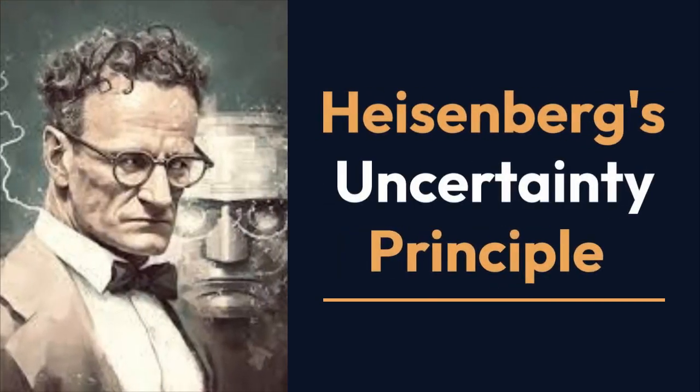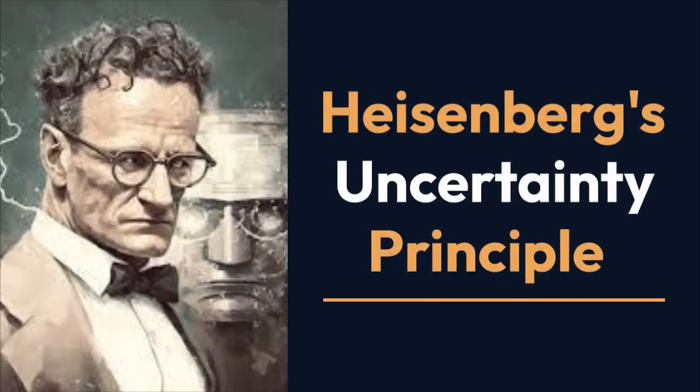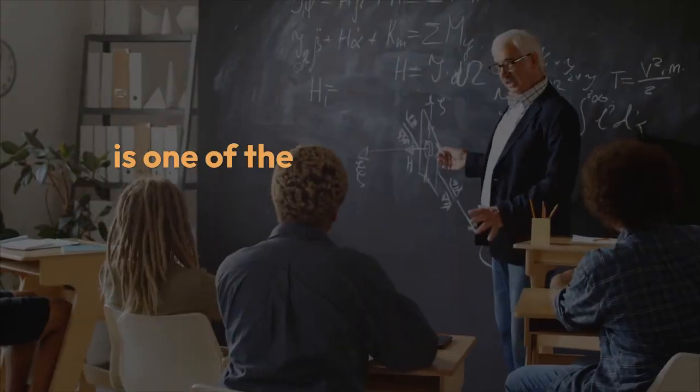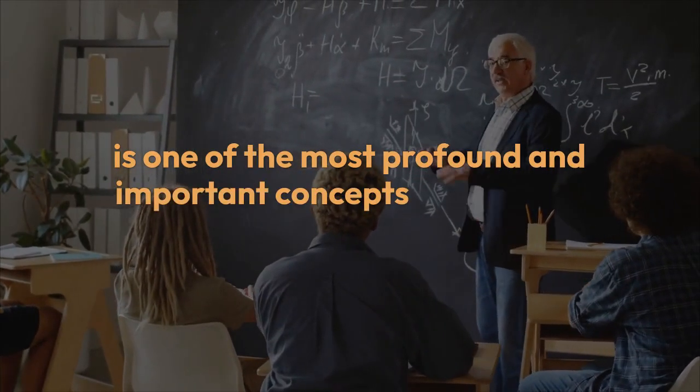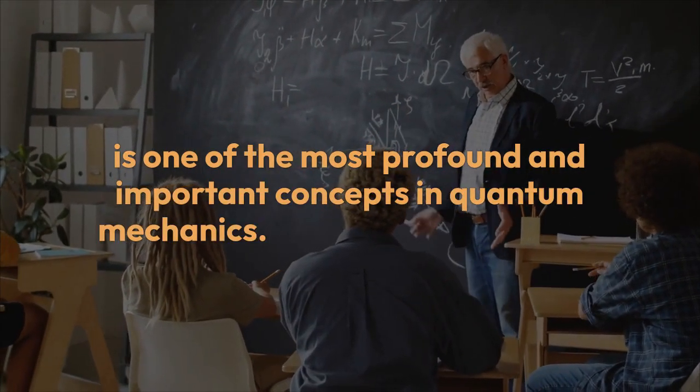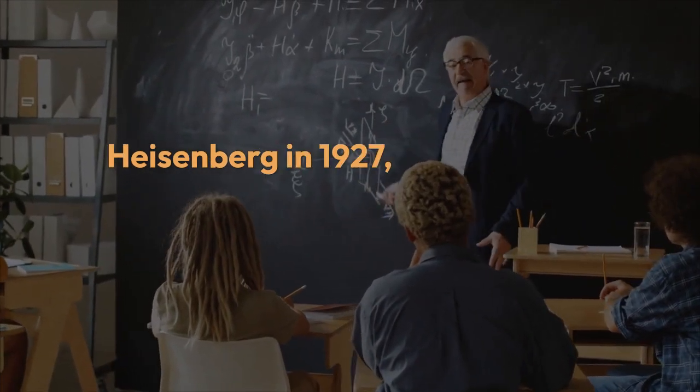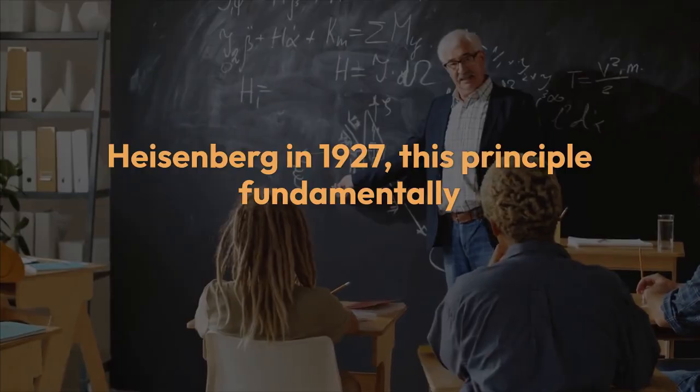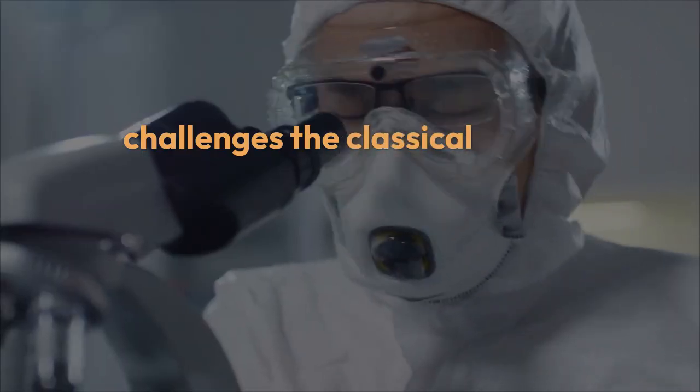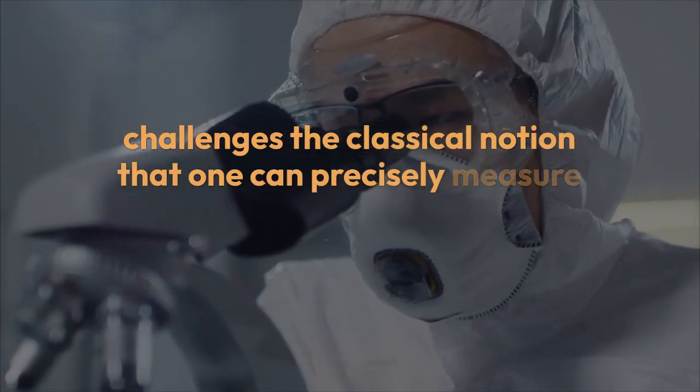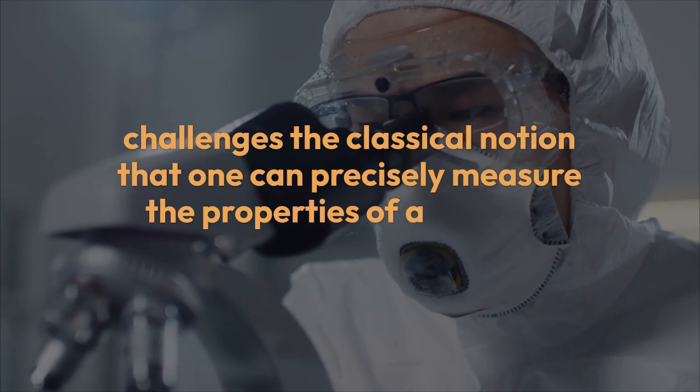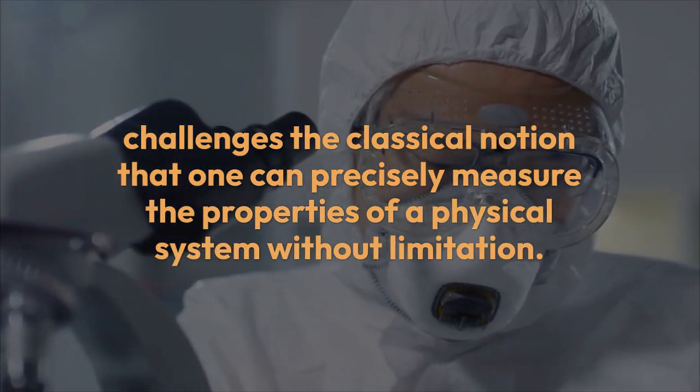Heisenberg's Uncertainty Principle is one of the most profound and important concepts in quantum mechanics. Introduced by Werner Heisenberg in 1927, this principle fundamentally challenges the classical notion that we can precisely measure the properties of a physical system without limitation.